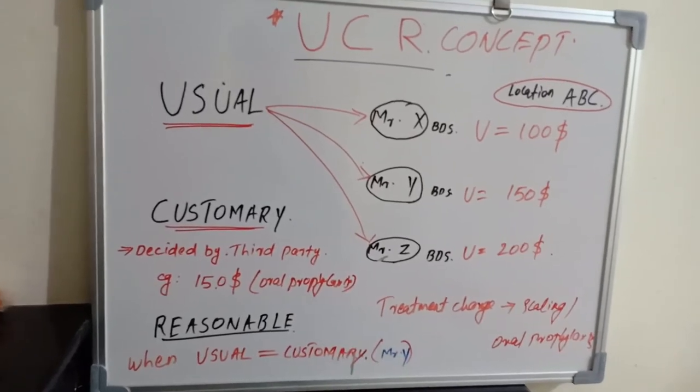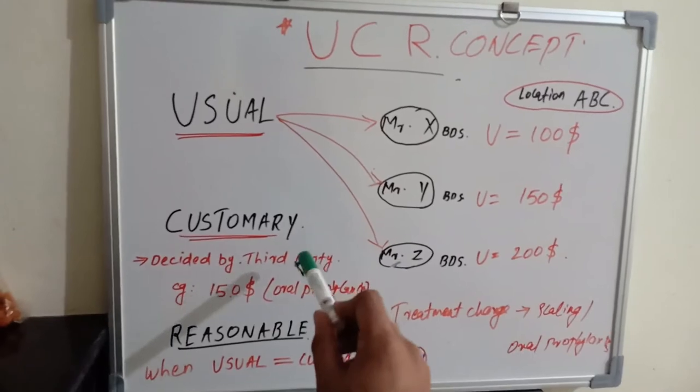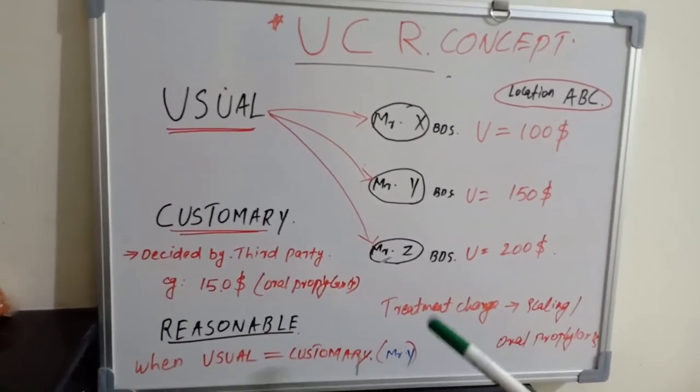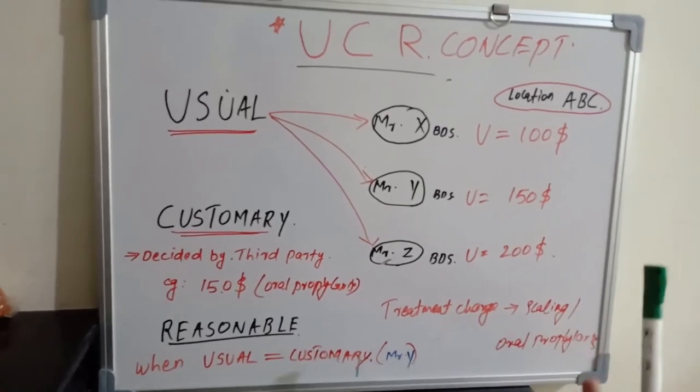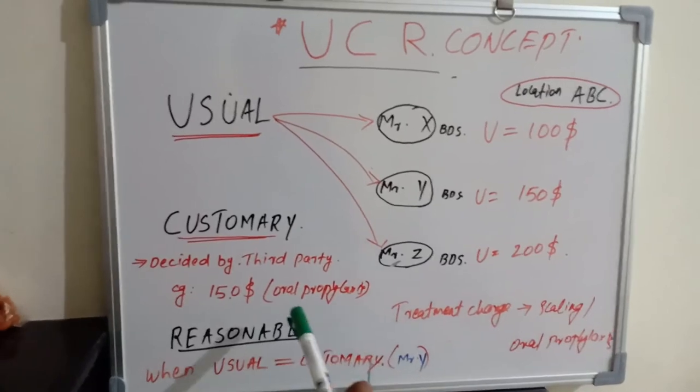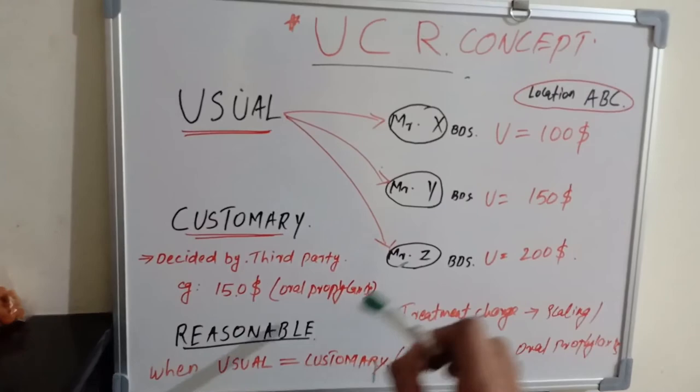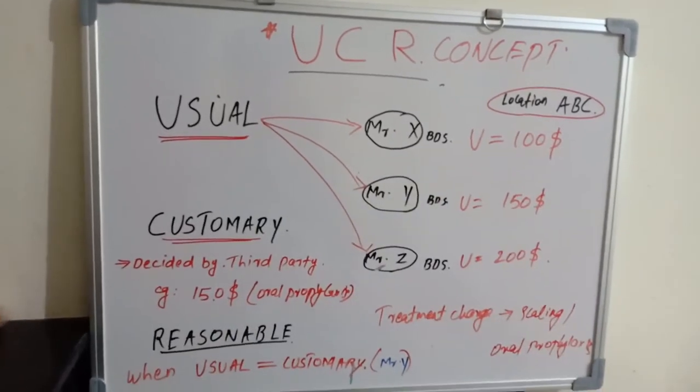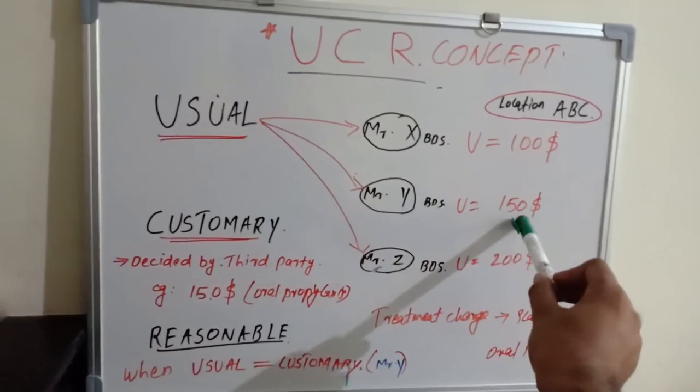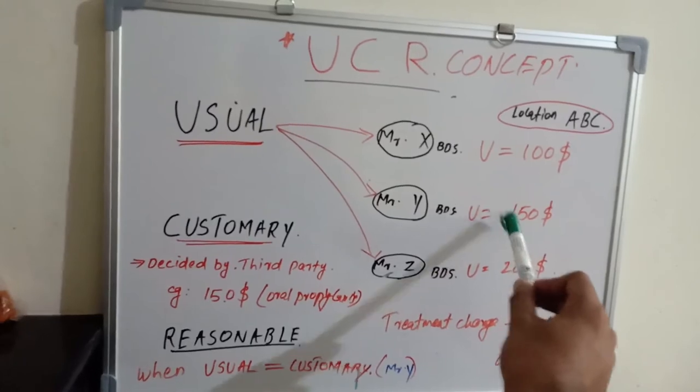Just an example: the customary fee calculated by the third party is $150 for an oral prophylaxis. Each treatment will have a different usual fee - that is the customary fee which is customer-friendly. You can see that Mr. Y's usual fee and customary fee are matching. Mr. Y's fee is reasonable.